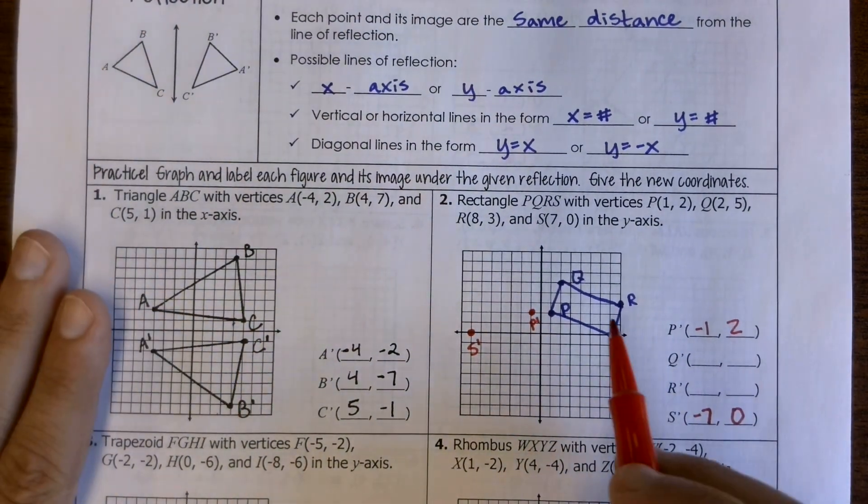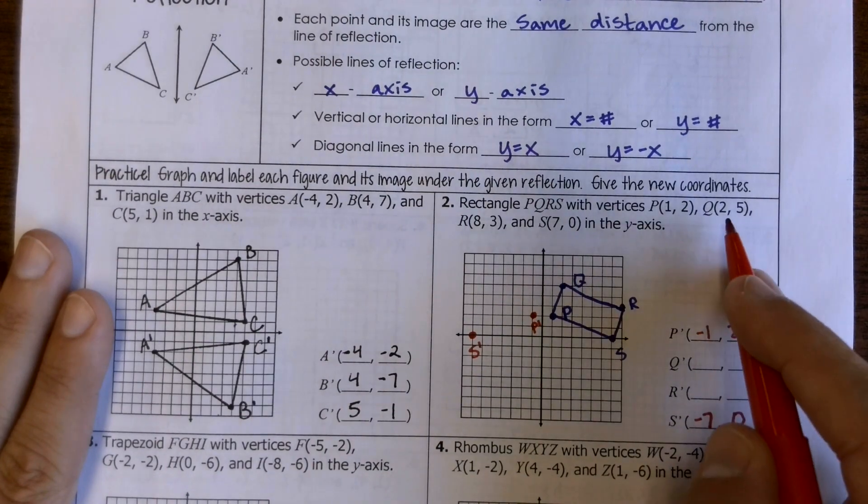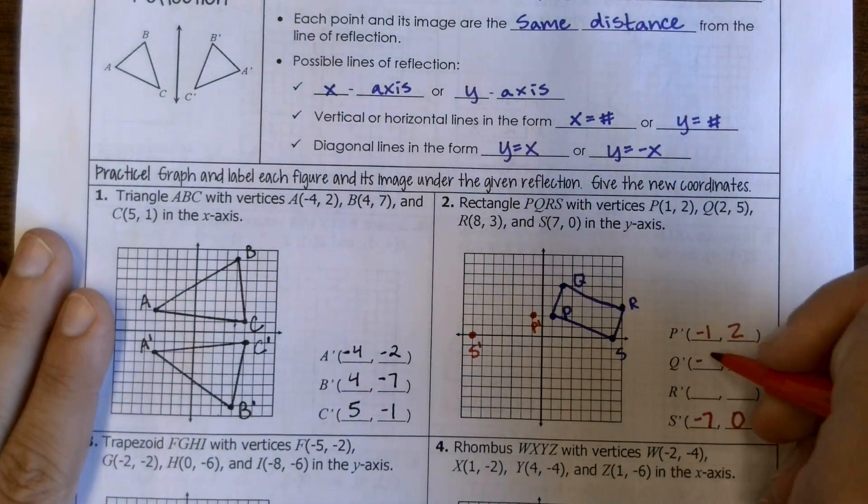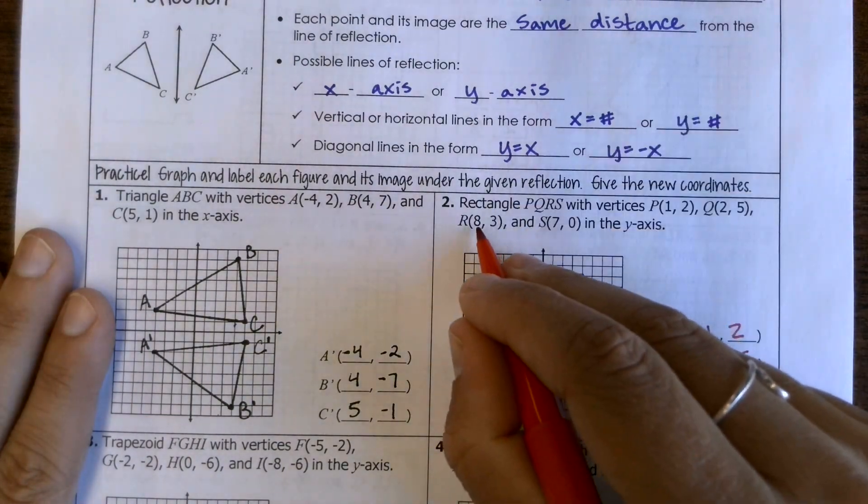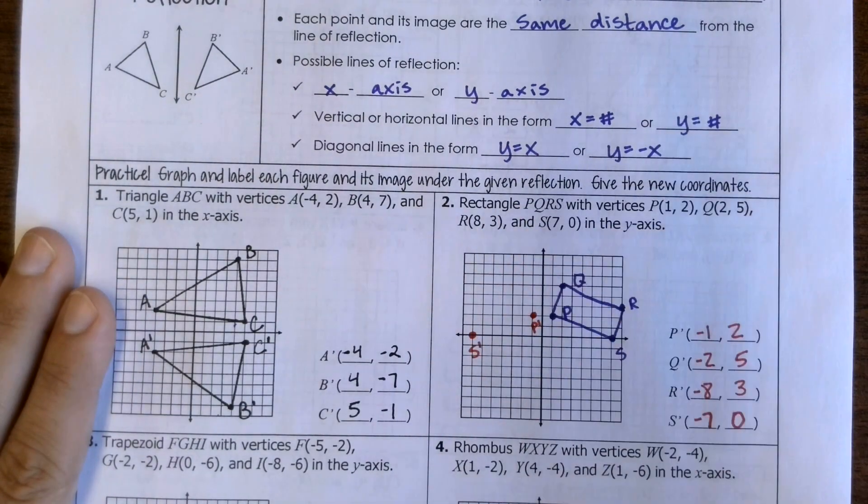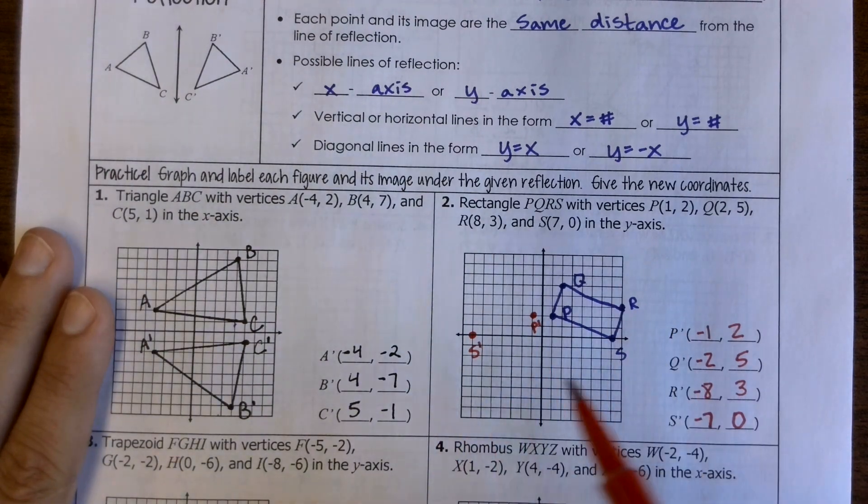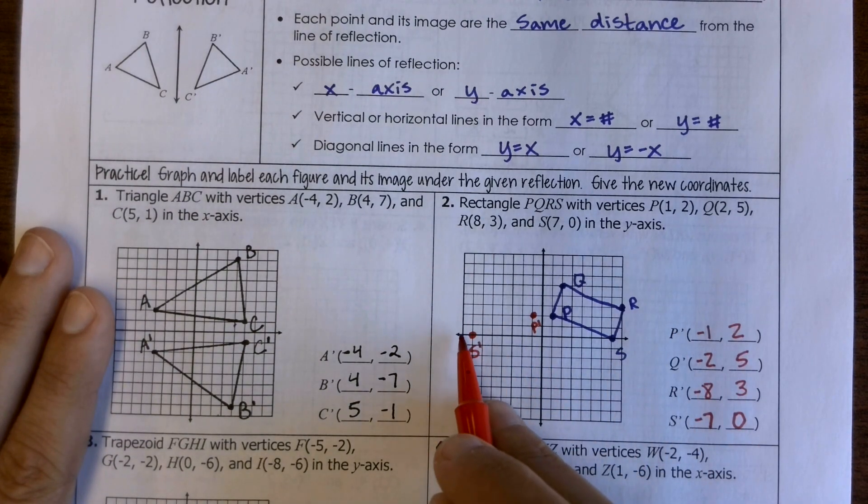Once we see the pattern here, we know that just the x-value is changing signs. I could go ahead and say my Q will be at (-2, 5), my Q prime, and then R prime will be at (-8, 3). But then visually, I want to go ahead and make sure that that's true. So my (-8, 3) for R prime,